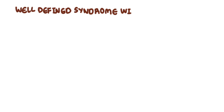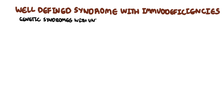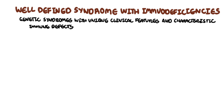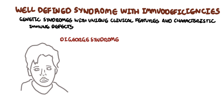Well-defined syndromes with immunodeficiencies are a group of genetic syndromes with unique clinical features and well-characterized underlying immune defects. The features include dysmorphology with recurrent infections and autoimmune diseases. Good examples include DiGeorge syndrome and Job syndrome.